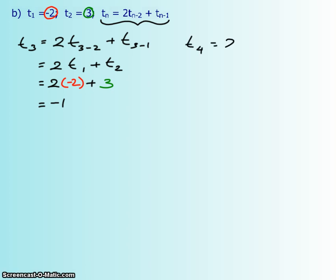Okay, t₄ is equal to 2 times t₄₋₂ plus t₄₋₁. And then t₂ was 3, yes.